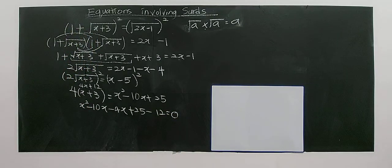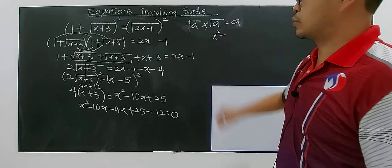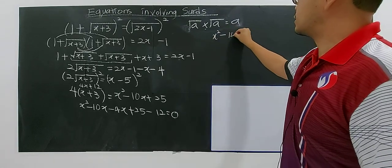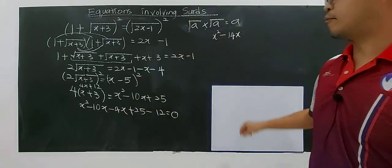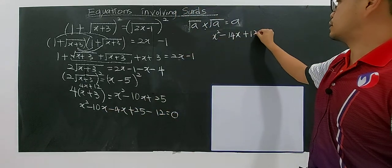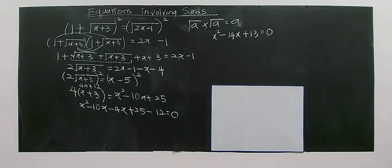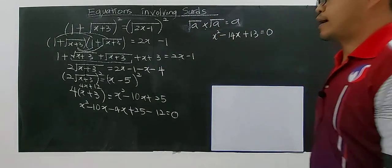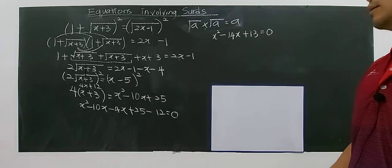So finally you still get a quadratic form. You have x squared minus 14x. 25 minus 12 equals 13, so plus 13 equals 0. No more surd — you have squared everything. So you have x squared minus 14x plus 13 equals 0.